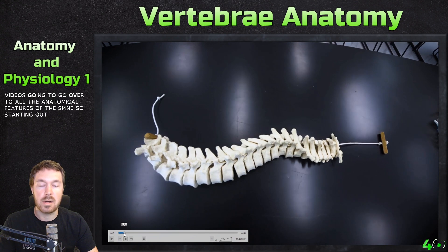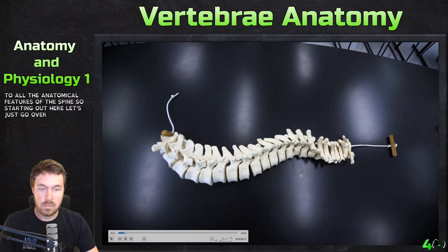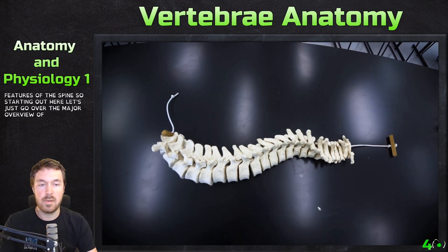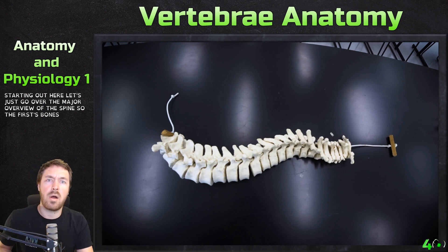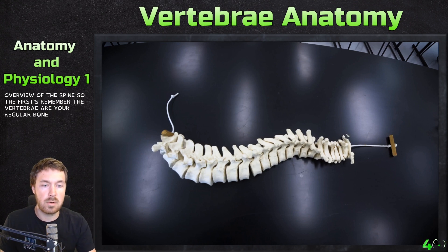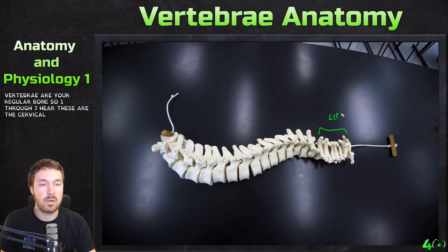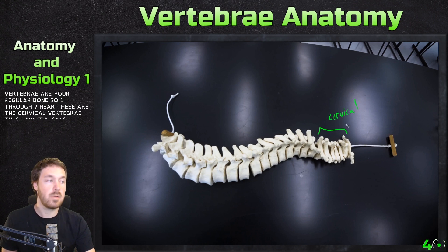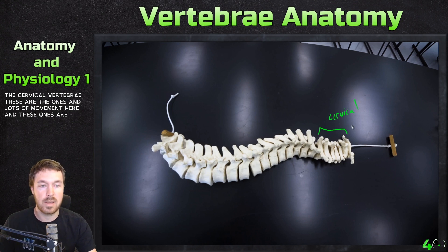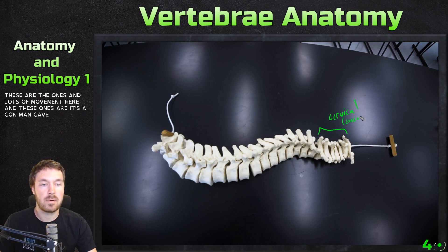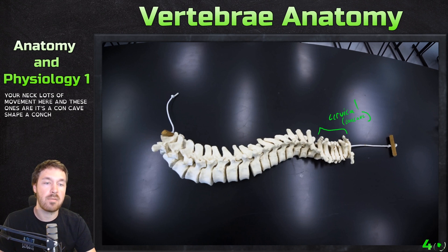Starting out here, let's go over the major overview of the spine. The first seven bones — vertebrae one through seven — are the cervical vertebrae. These are the ones in your neck. There's lots of movement here, and these ones have a concave curvature.